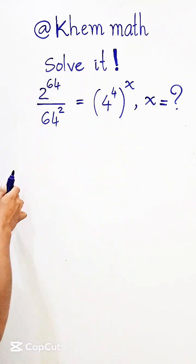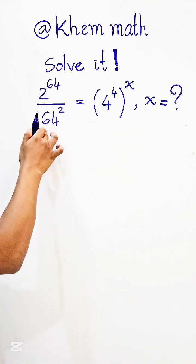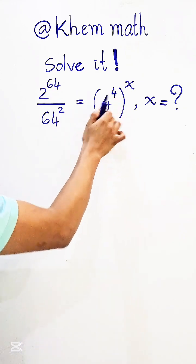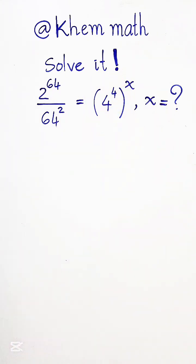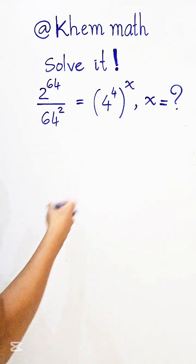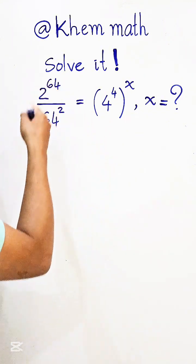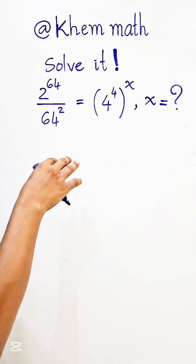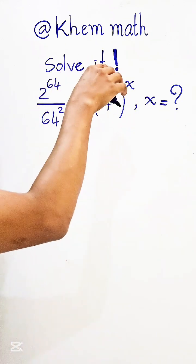So, 2 to the power 64 divided by 64 squared equals 4 to the power of 4x times 8. Find the value. This is an exponential equation. We want to show that the left-hand side and right-hand side have the same base, and then compare the exponents.